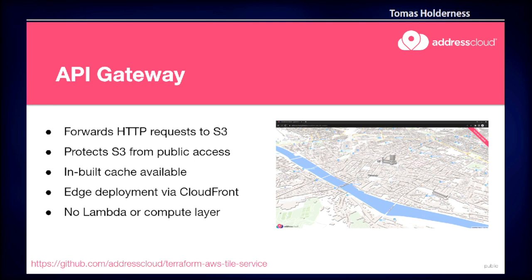A couple of extra things it does that are really nice: there's inbuilt caching available, so we can be caching those tiles on the fly. There's a live demo — if you hit the GitHub shown on screen, you can play around with a little map of Florence. API Gateways are deployed at the edge, so it's really close geographically to your users and you get quite low latency. And there's no compute layer in this architecture — 100% serverless, because there is no Lambda function, no code, no logic. It's just API Gateway as a service waiting for requests and passing them on to S3.